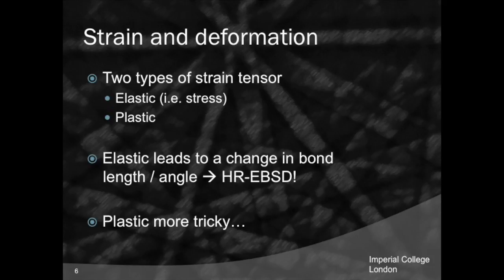We can describe this tensor in terms of the elastic — that is, shifting the bonds away from their equilibrium position, which is related to stress within our system. When you permanently change the object by kicking dislocations through the material, you get a permanent shape change that is plastic. As a diffraction-based technique, we can only access the elastic strains, because we are looking specifically at the change in bond angle.